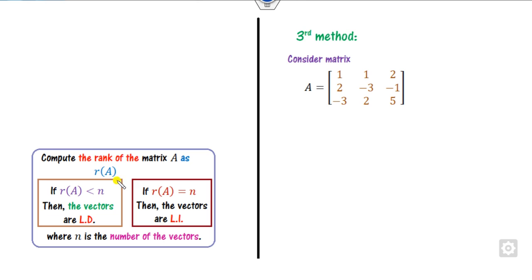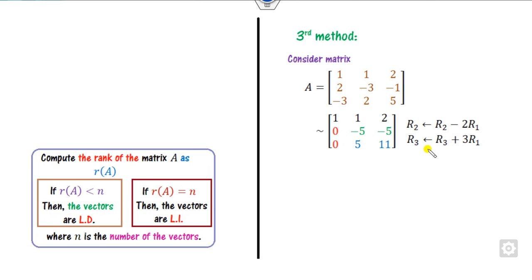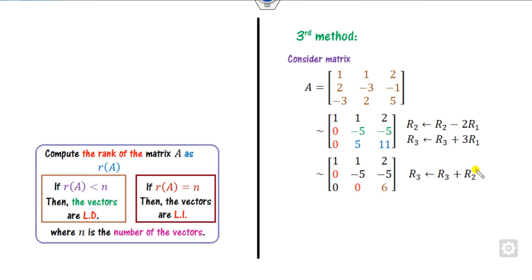For Method 3 in detail: form matrix A with the three vectors as columns. Apply row elementary operations — R2 minus a multiple of R1, then R3 plus R2 — to reduce the matrix. Your target is to make the lower entries zero. After row reduction, the rank of this matrix is 3, which equals n (the number of vectors), so the vectors are linearly independent.